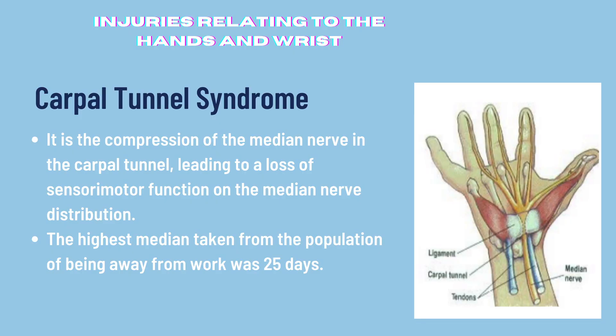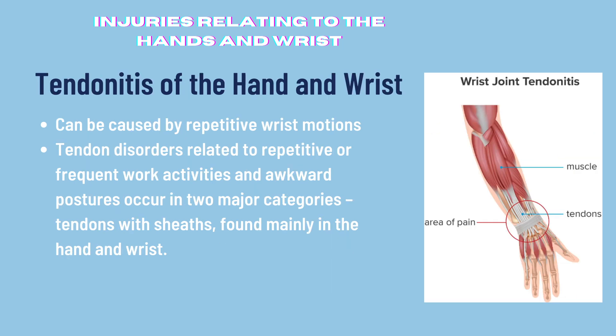One of the most common injuries found in the hand and wrist is carpal tunnel syndrome. This injury is due to decompression of the median nerve in the carpal tunnel, leading to a loss of sensory motor function on the median nerve distribution. Due to carpal tunnel syndrome, the highest median taken from the population for days away from work was 25 days, while for other wrist-related injuries it resulted in a median of 13 days away from work. Another injury is tendonitis of the hand and wrist, due to repetitive wrist motions. Tendons consist of numerous bundles of fibers that attach to muscles and bones, and tendon disorders are related to repetitive or frequent work activities and awkward postures. Tendonitis is a general term indicating the inflammation of the tendon.